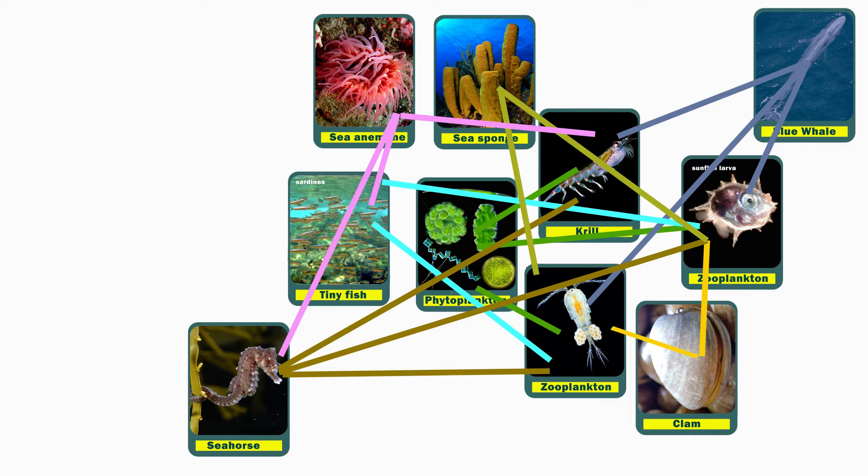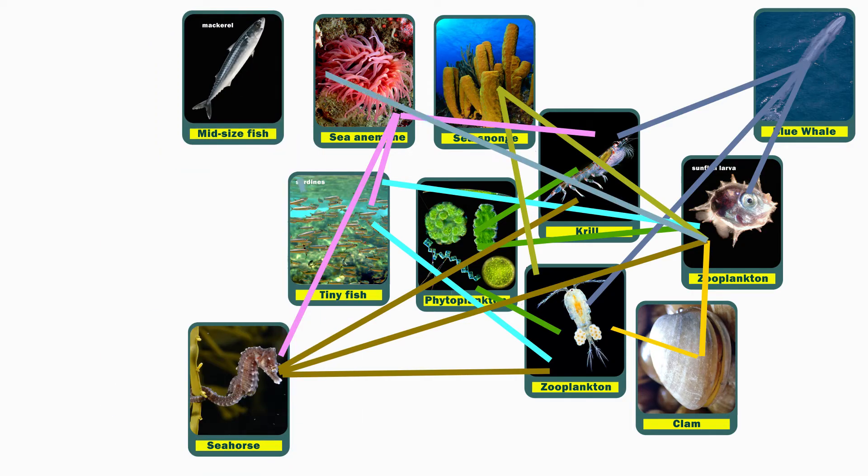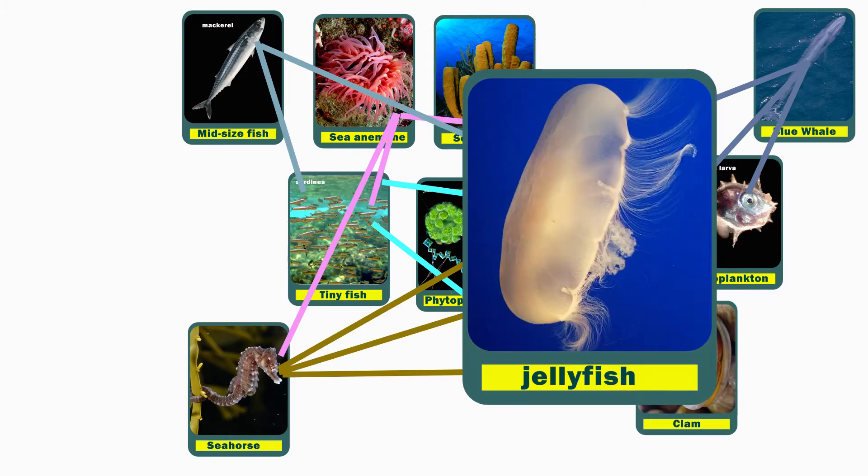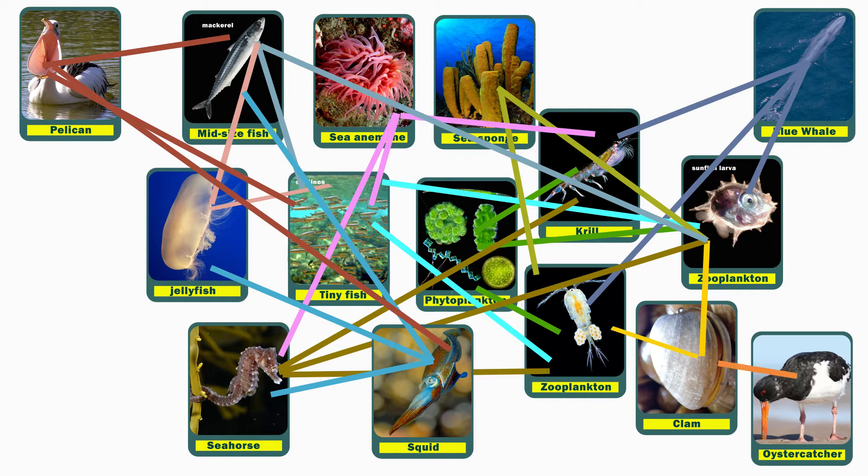Now these creatures have multiple predators that eat them, like bigger fish and jellyfish, squids, shorebirds, and more.